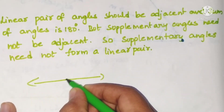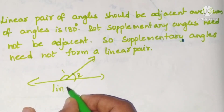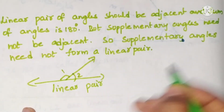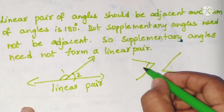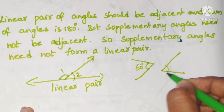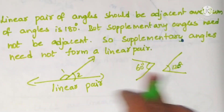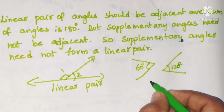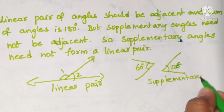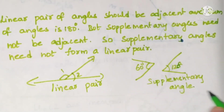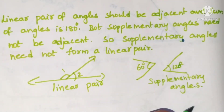Here is an example: angle 1 and angle 2 are a linear pair. And here, 60 degrees and 120 degrees — these two angles are not adjacent, but they are supplementary. So supplementary angles: if the sum of two angles is 180 they are called supplementary. This is linear pair, and this is supplementary angles.